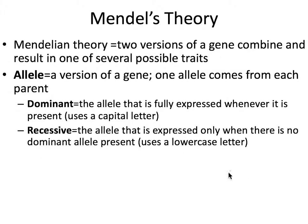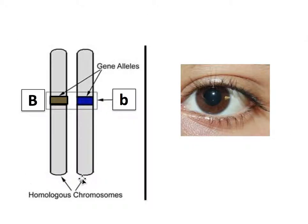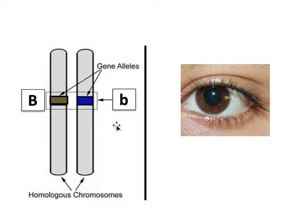We use a lowercase letter to indicate the recessive allele. For example, with homologous chromosomes — all our chromosomes are paired — the gene for eye color comes in different versions called alleles. The allele for brown eye color is dominant, so we indicate it with a capital B. The allele for blue eye color is recessive, so we indicate it with a lowercase b, because brown is dominant over blue. Even though a person has a blue eye allele, it won't be expressed because it is recessive.